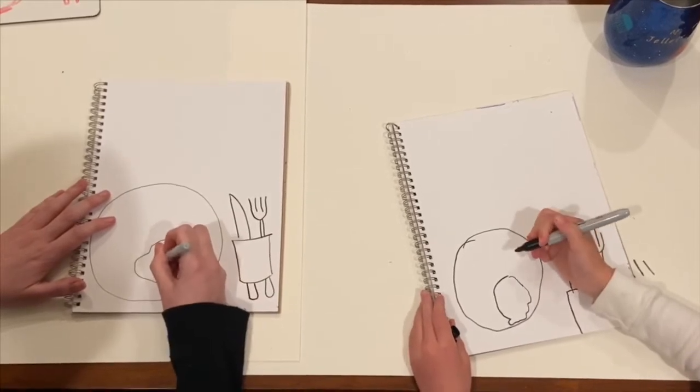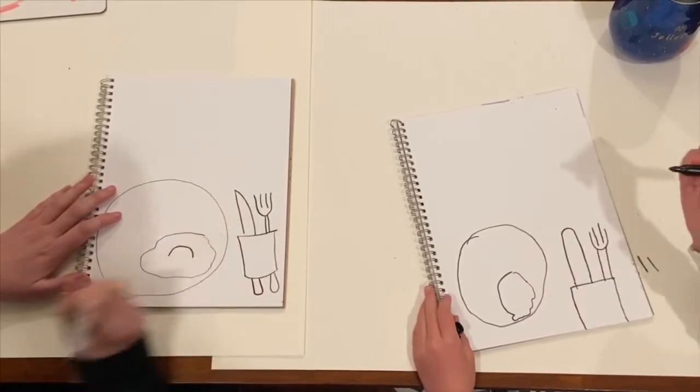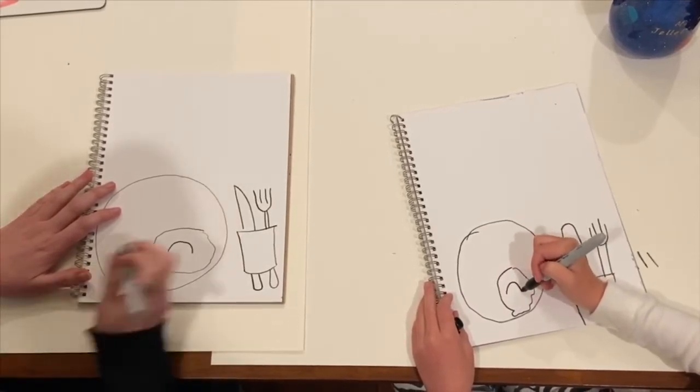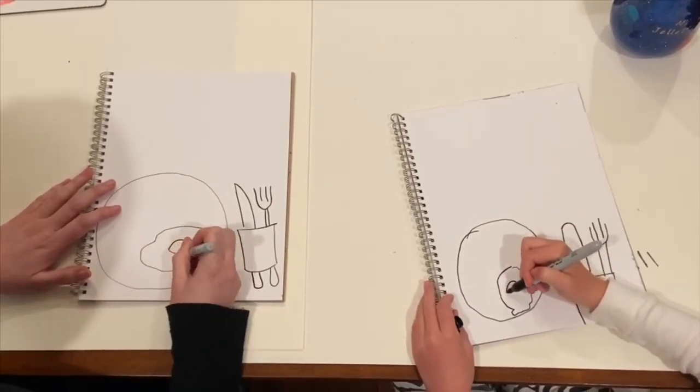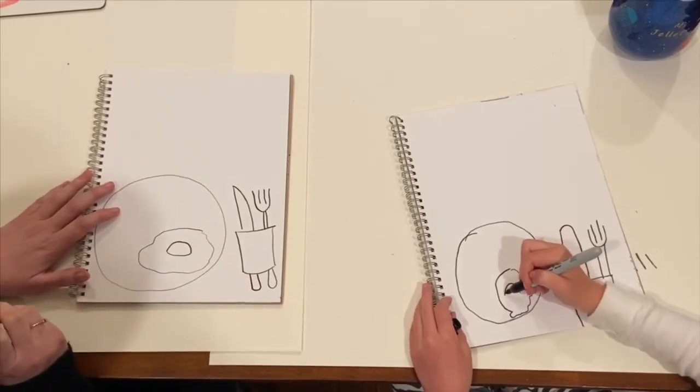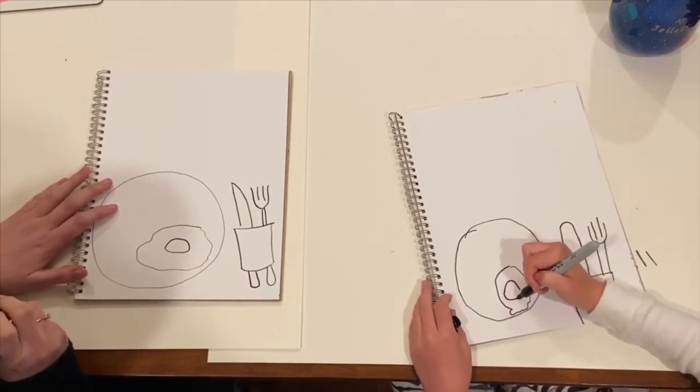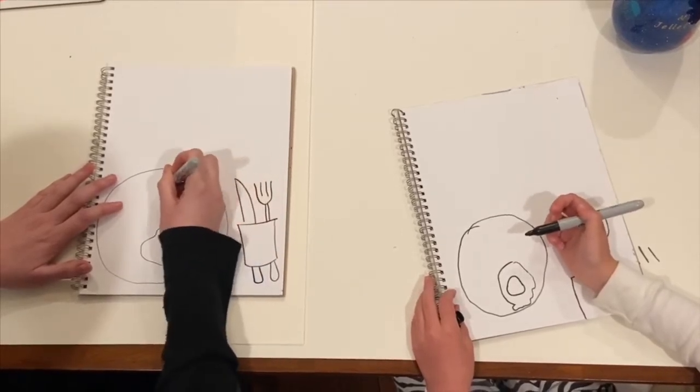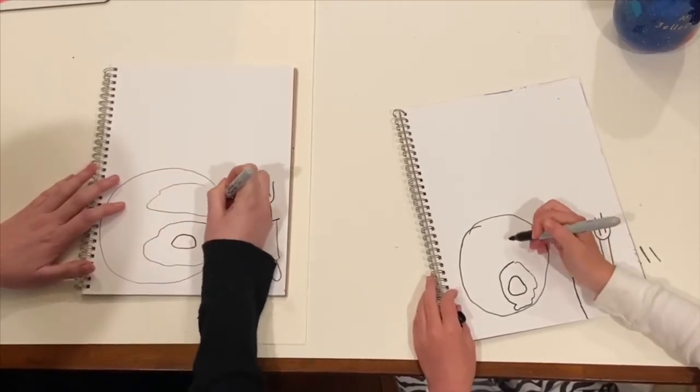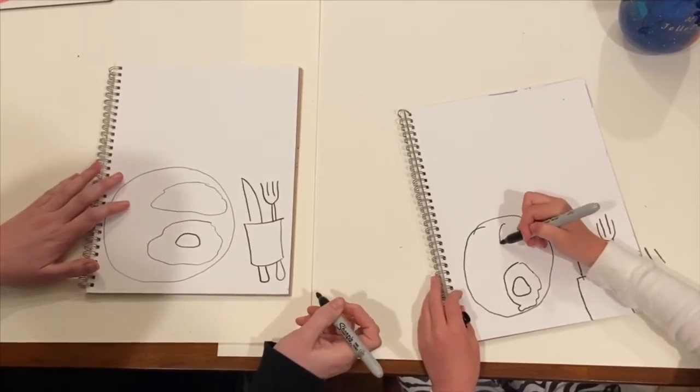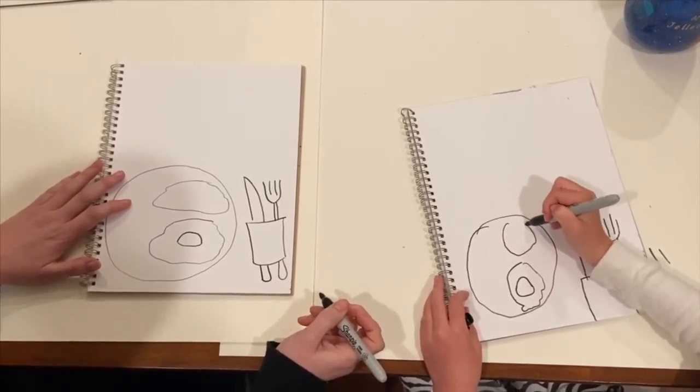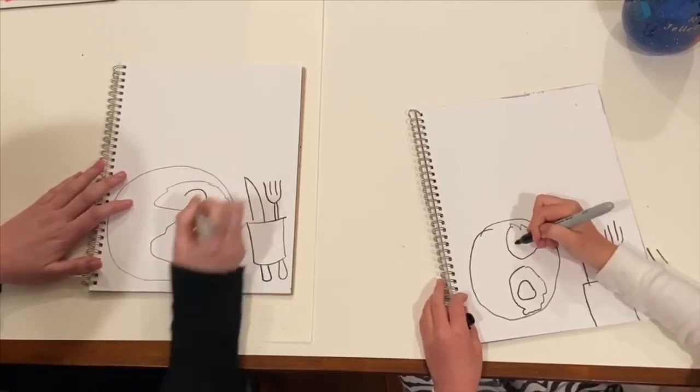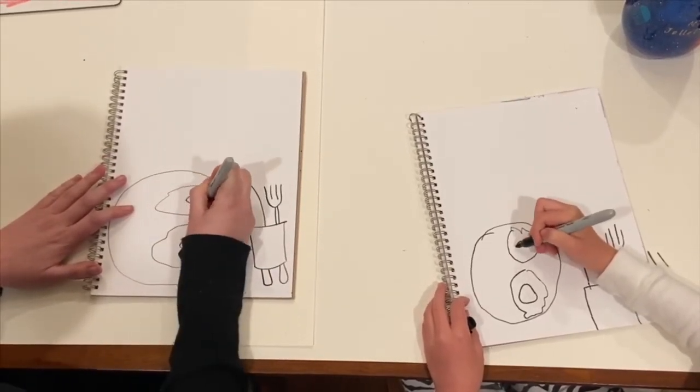Then you're going to come make a small mountain in the middle and then a curved bottom, just slightly curved. Now I'm going to do the same irregular shape above, and then I'm going to draw the yolk in the middle again. Mountain closed.